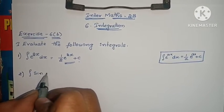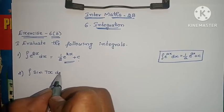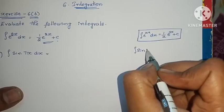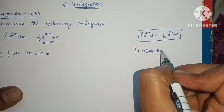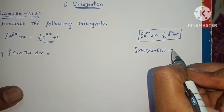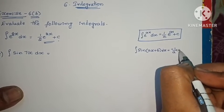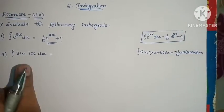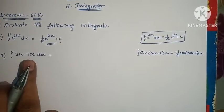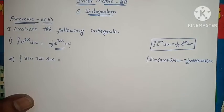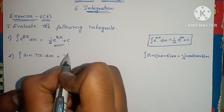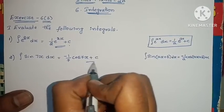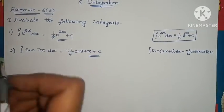Second question: integral of sin(7x) dx. The formula is: integral of sin(ax + b) dx equals minus 1/a · cos(ax + b) + c. Here b value is 0, so we only have 7x. Applying the formula: minus 1/7 · cos(7x) + c. The problem is complete.